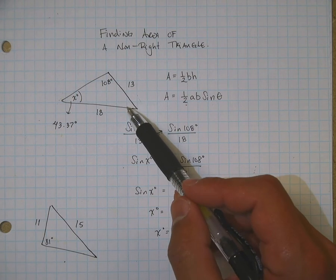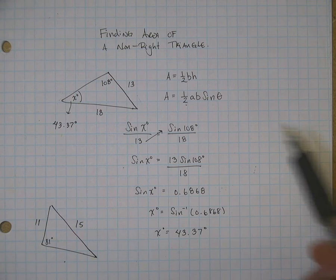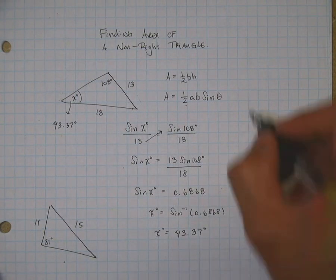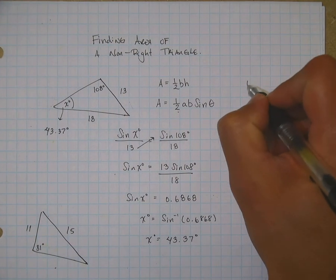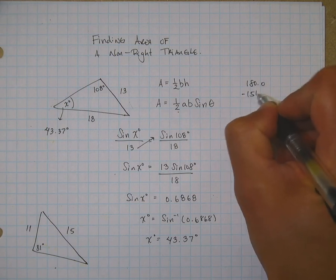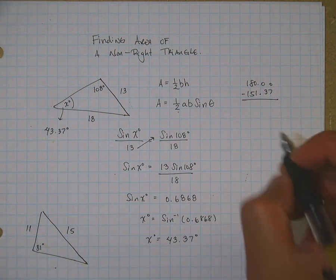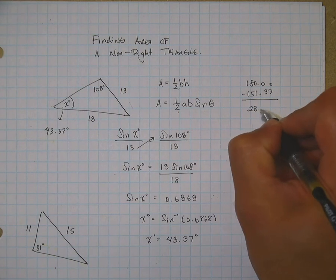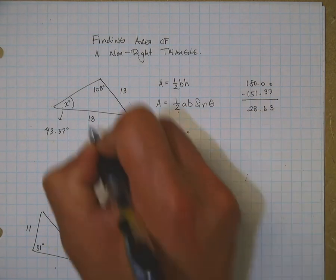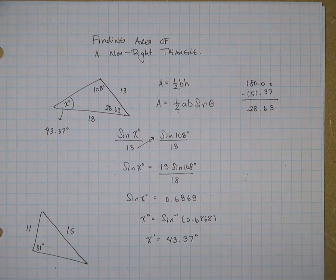Because you know that a triangle adds up to 180. So, 108 plus 43.37, that's going to give me 151, subtract that from 180, and that should give you 28.63 degrees. So, this guy right here is 28.63 degrees.